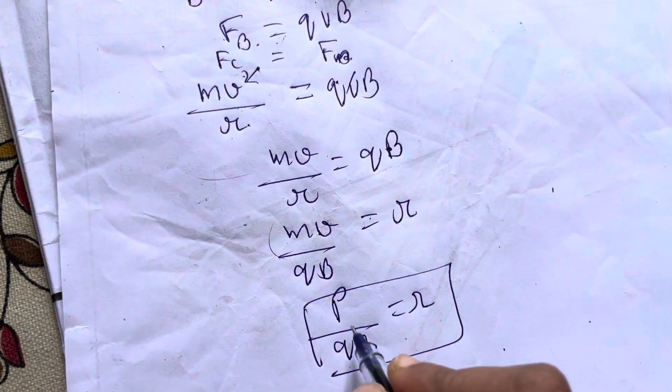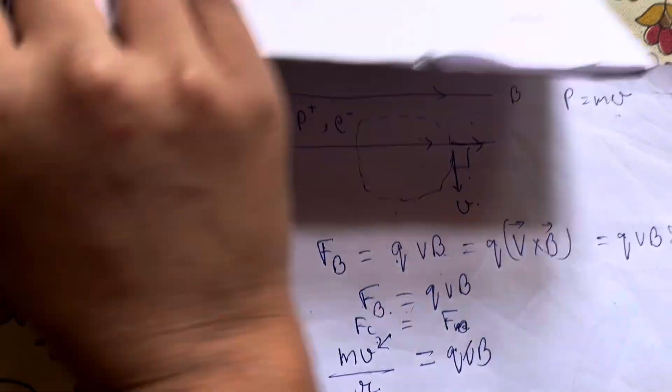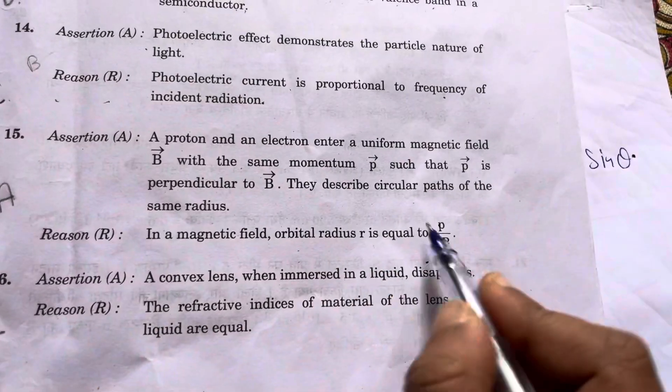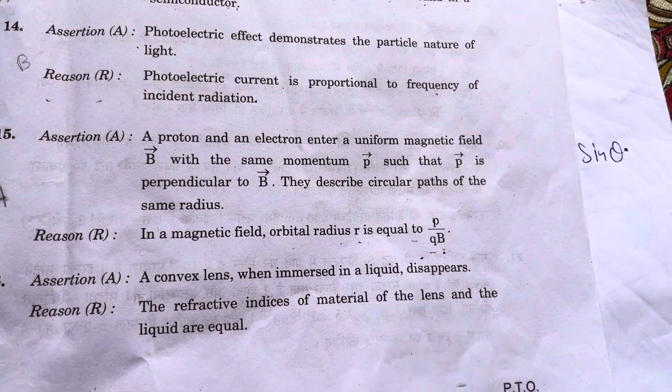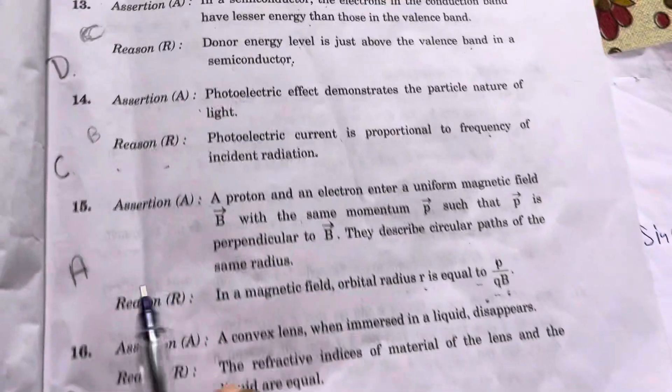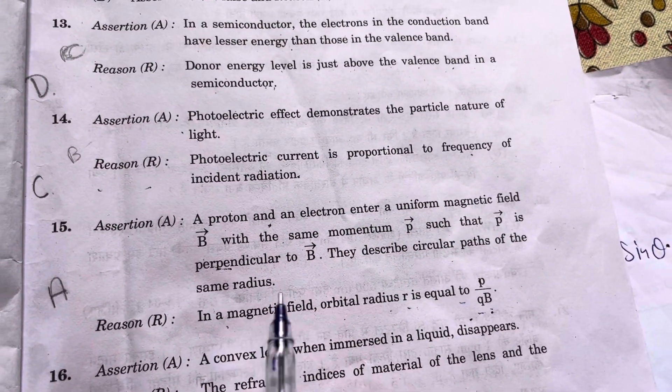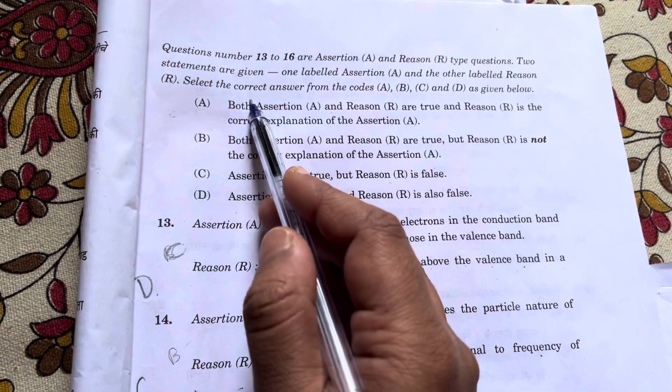Now Q is the charge. Electron and proton charges are the same magnitude. So the orbital radius is equal for both. This is the answer. And the reason is the correct explanation of the assertion. So option A is correct.